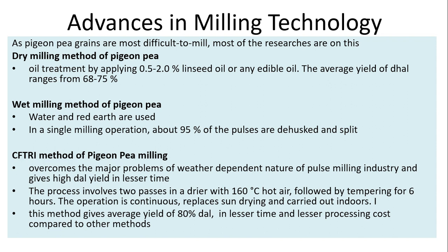Advances in milling technology: pigeon pea (PGNP) grains are the most difficult to mill, so most research is focused on finding a new milling technology. In the dry milling method of PGNP, oil treatment involves applying 0.52 to 2 percent lean seed oil or any edible oil, with an average yield of dal ranging from 68 to 75 percent.